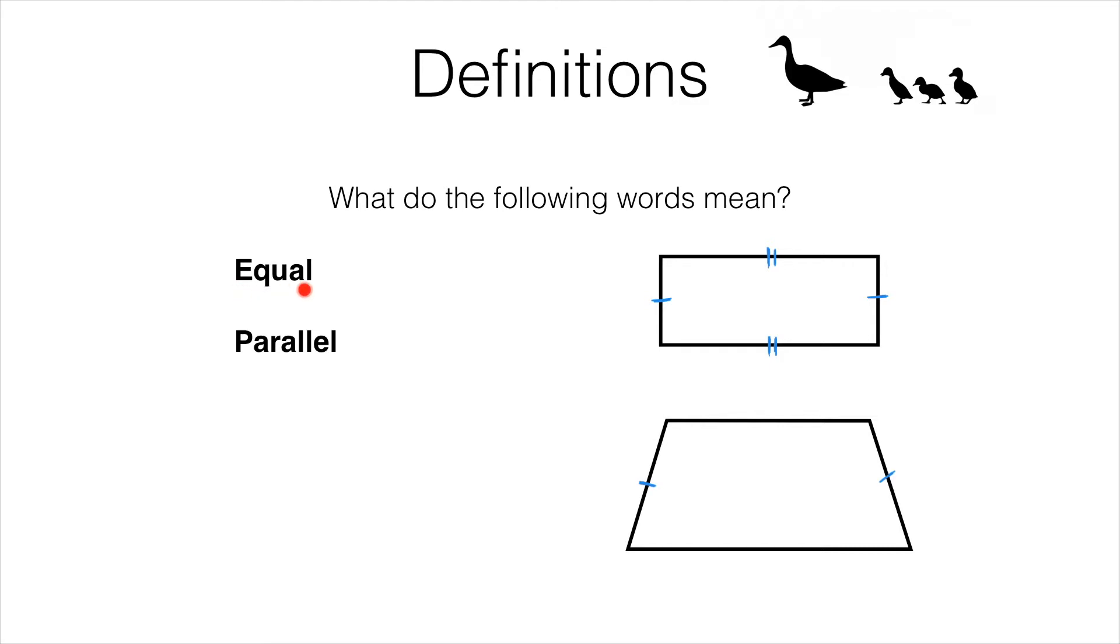We could also use the word equal in the context of angles. In the trapezium we have an angle down here that is the same size as the angle over here. To make clear that they are the same size we could use a special symbol. Instead of this standard marker for angles we could go with a double marker and that shows that they are the same size.